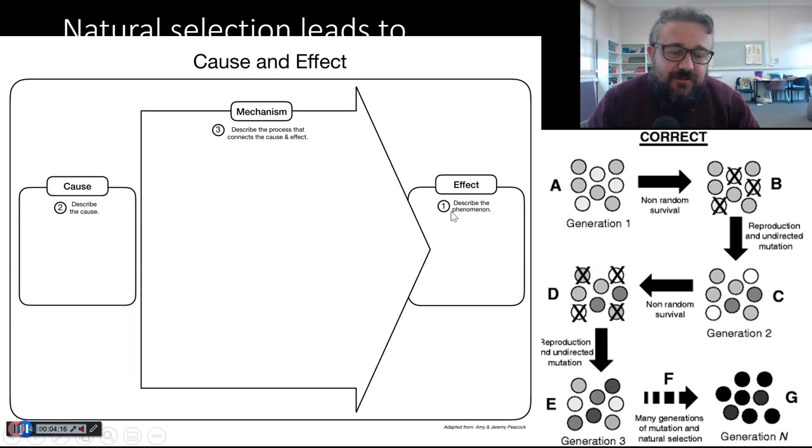So, you'll notice here that I've put the numbers and the orders, which I would fill this out. I would have the phenomenon describing, in this case, natural selection leading to phenotypic changes in an environment, in an ecosystem. The cause, I would describe the cause of that, and then the mechanism. And that's the order.